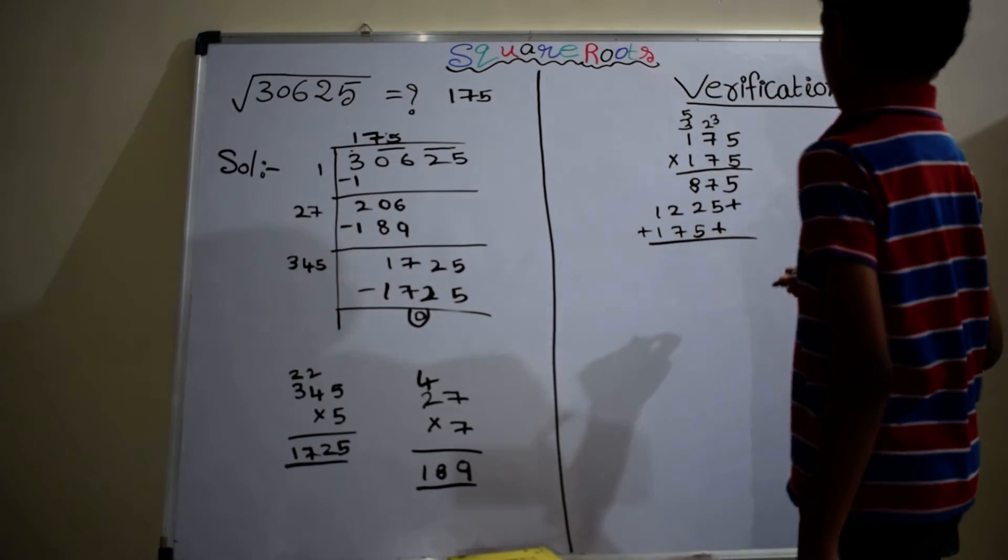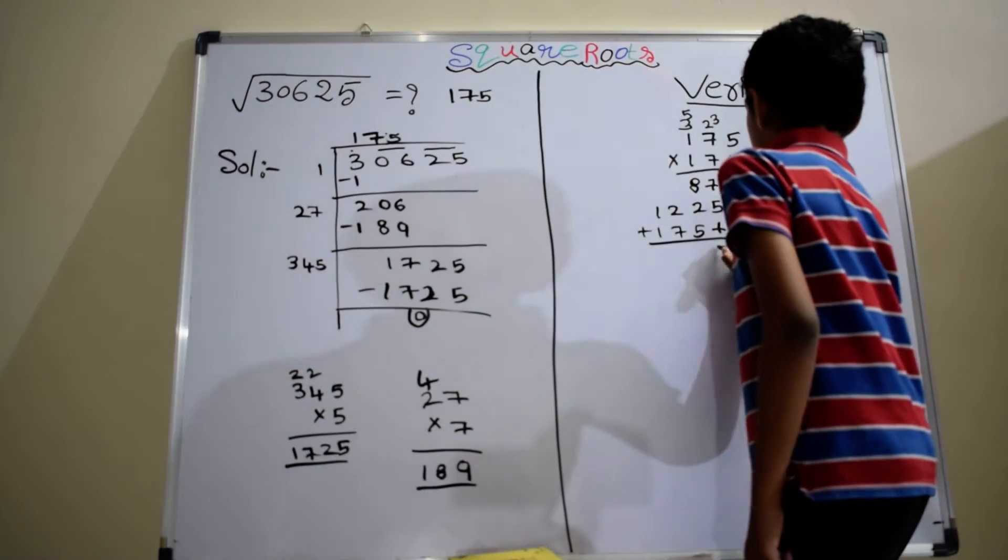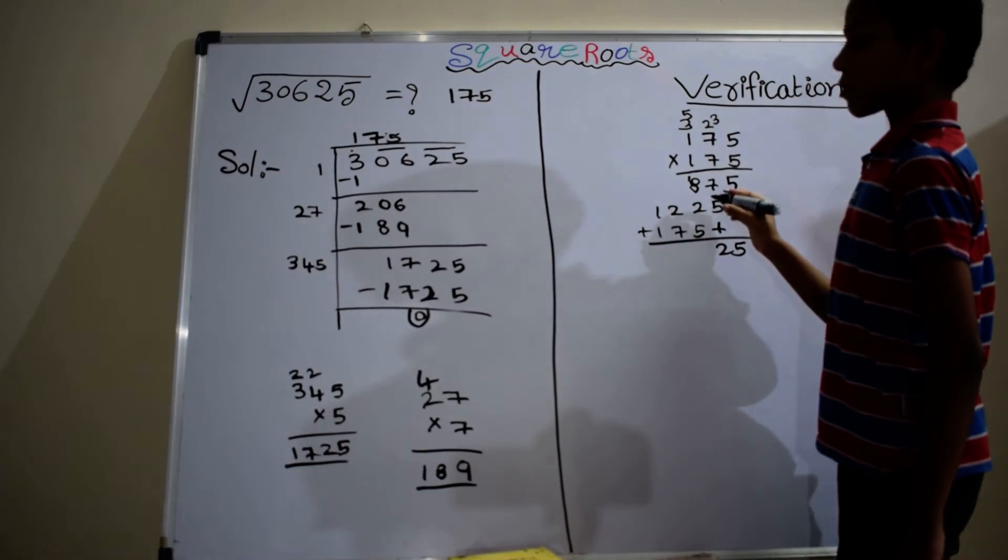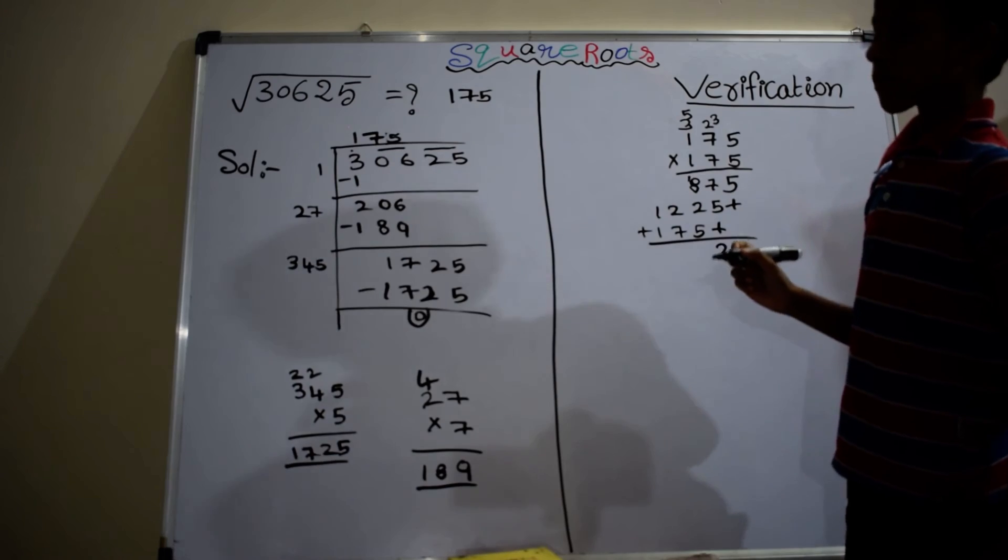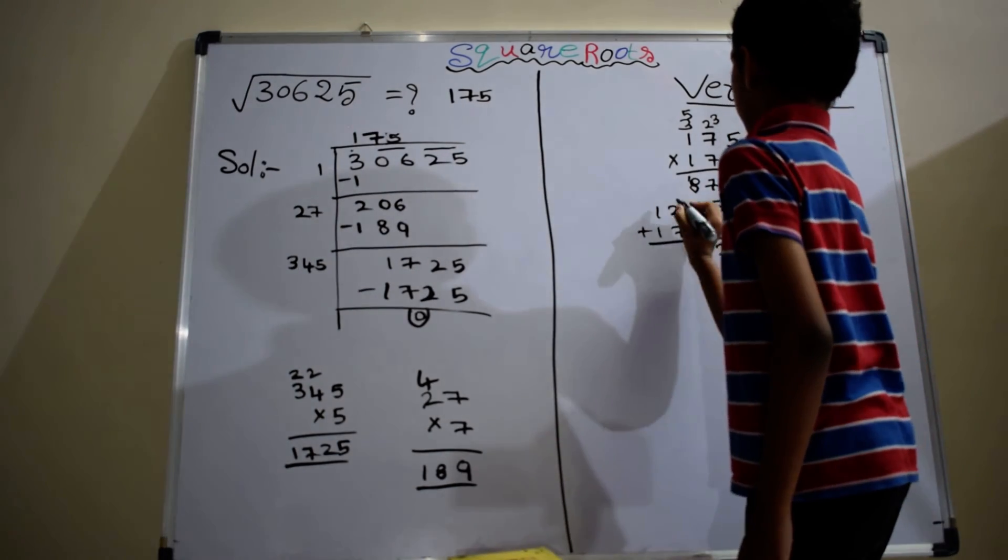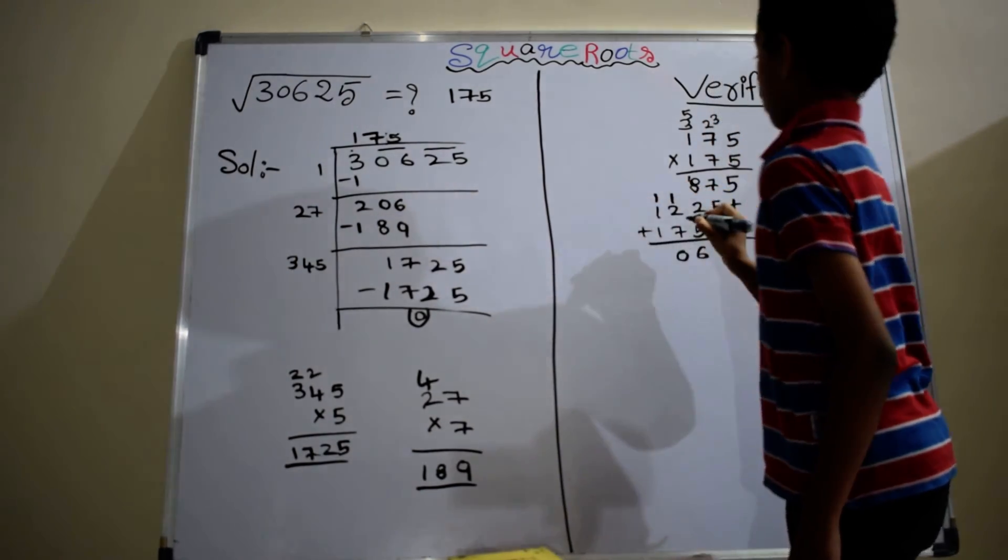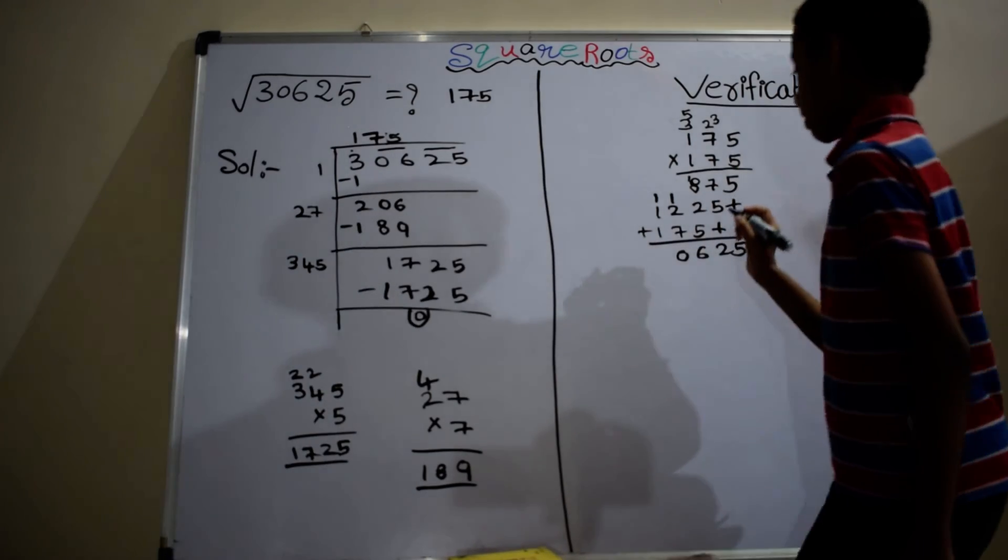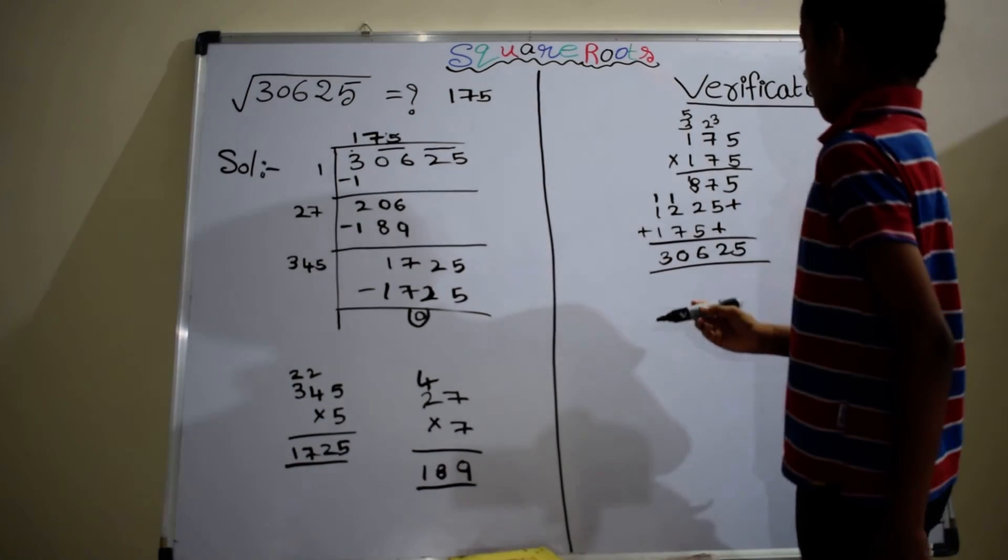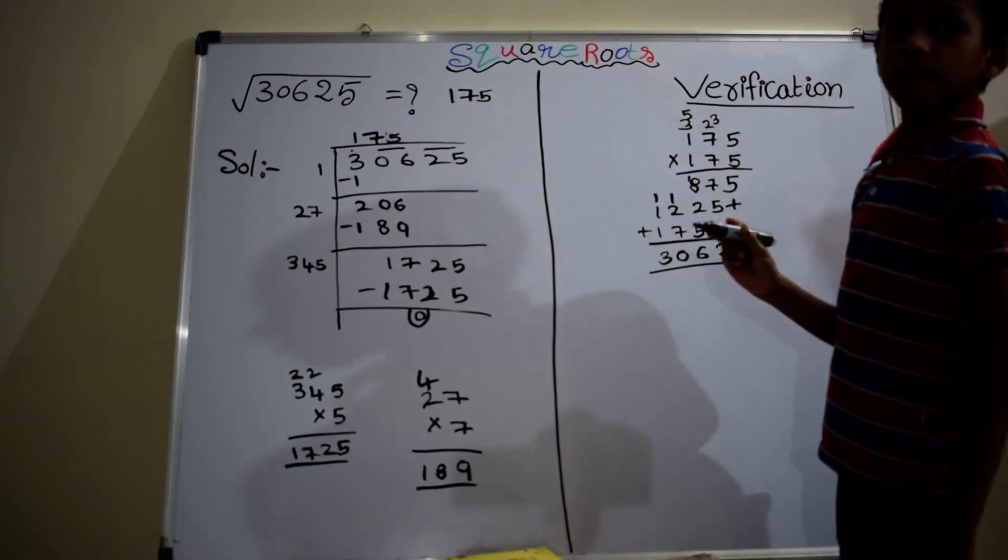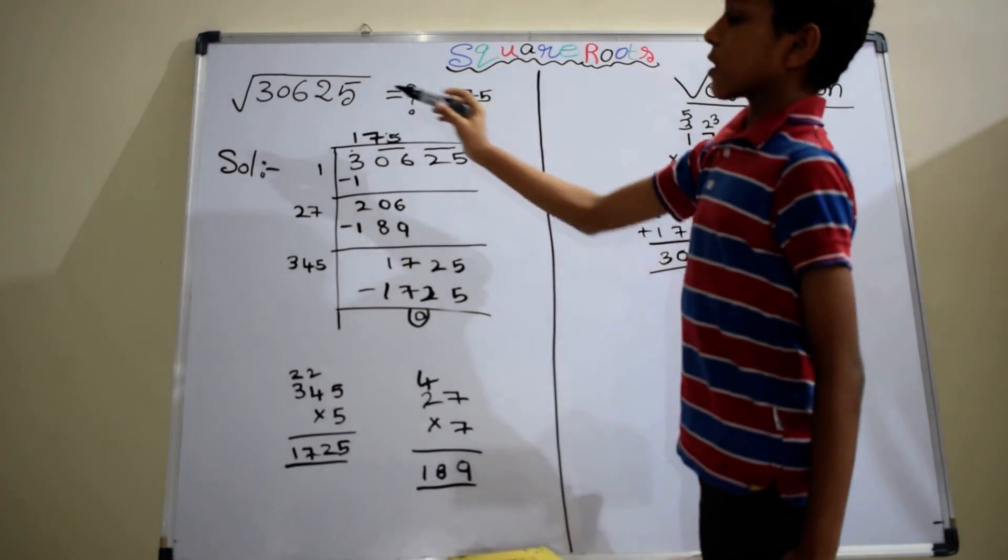Now, we are adding. 7 plus 5, 12. 8 plus 2, 10 plus 1. 8 plus 2 plus 5, 15 plus 1, 16. 2 plus 7, 9 plus 1, 10. 1 plus 1 plus 1, 3. After multiplying 175 into 175, we got the same answer as the given number.